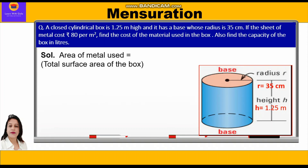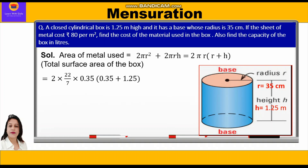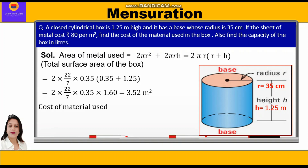We can take 2πr common and write r + h. Substituting the values: 2 × (22/7) × 0.35 × (0.35 + 1.25), which gives 2 × (22/7) × 0.35 × 1.60, which equals 3.52 meter square.